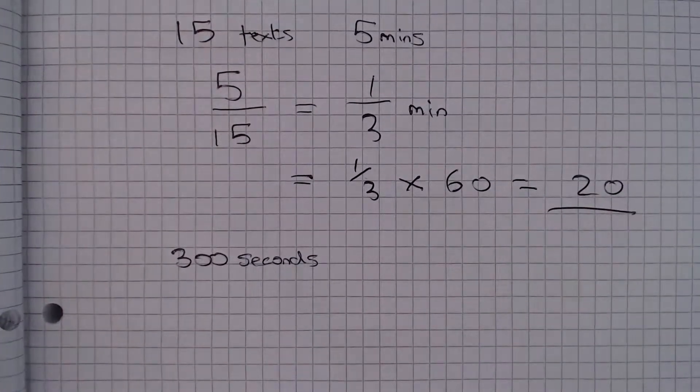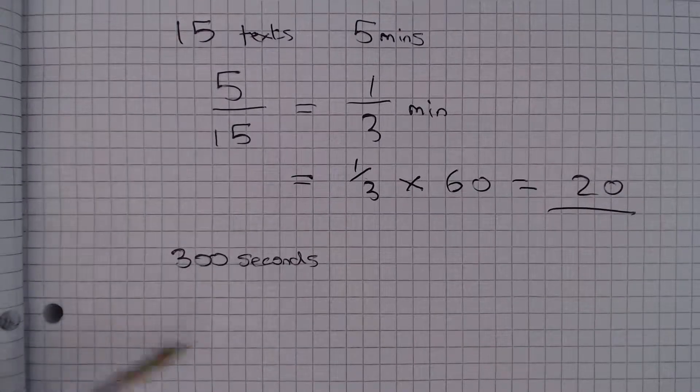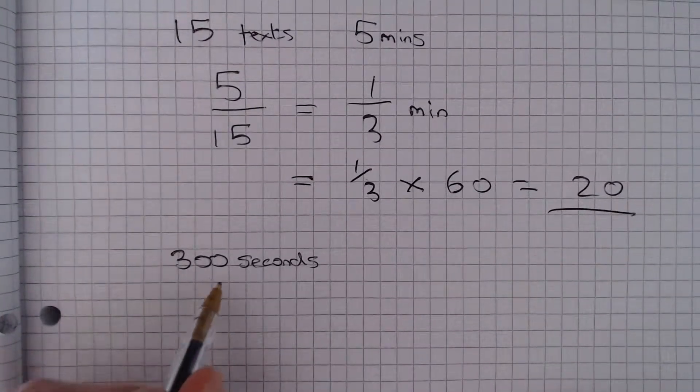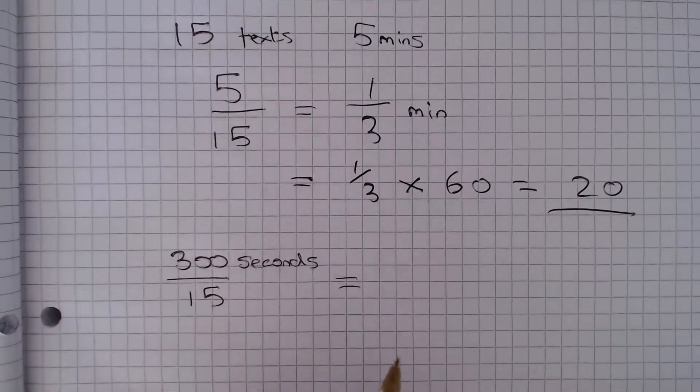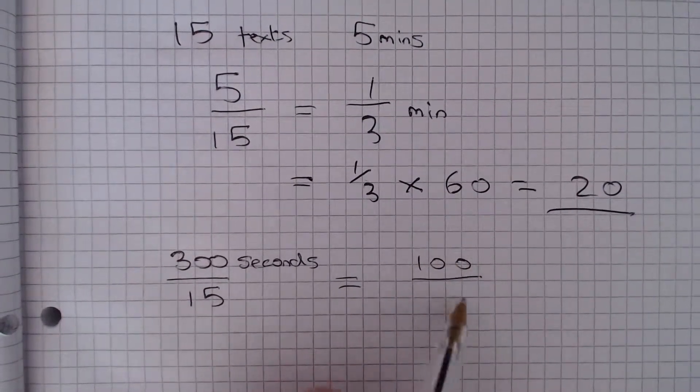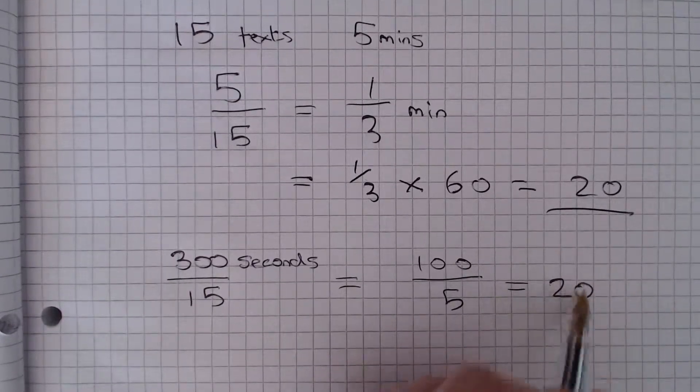And then we would say she sent 15 texts in 300 seconds, so we are going to do 300 divided by 15, which is the same as 100 divided by 5, which is 20.